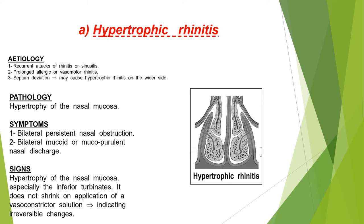Hypertrophic rhinitis is caused by recurrent attacks of rhinitis or sinusitis, prolonged allergic or vasomotor rhinitis, or septal deviation which may cause hypertrophic rhinitis on the wider side. Symptoms include bilateral nasal obstruction and bilateral mucoid or mucopurulent nasal discharge. On examination, you see hypertrophy of the nasal mucosa especially the inferior turbinates, which does not shrink on application of a vasoconstricting solution, indicating irreversible changes.